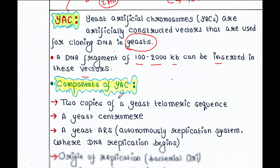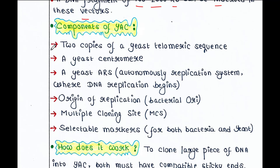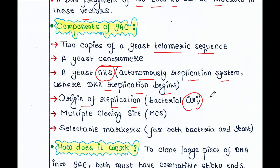Let's see what the components of YAC are. Two copies of a yeast telomeric sequence are present in YAC. A yeast centromere is present, and it has the ARS — autonomously replicating sequence — which is the system where DNA replication begins in eukaryotic cells. It also has an origin of replication, ORI, of bacterial origin. It has a multiple cloning site, MCS, and selectable markers for both bacteria and yeast.